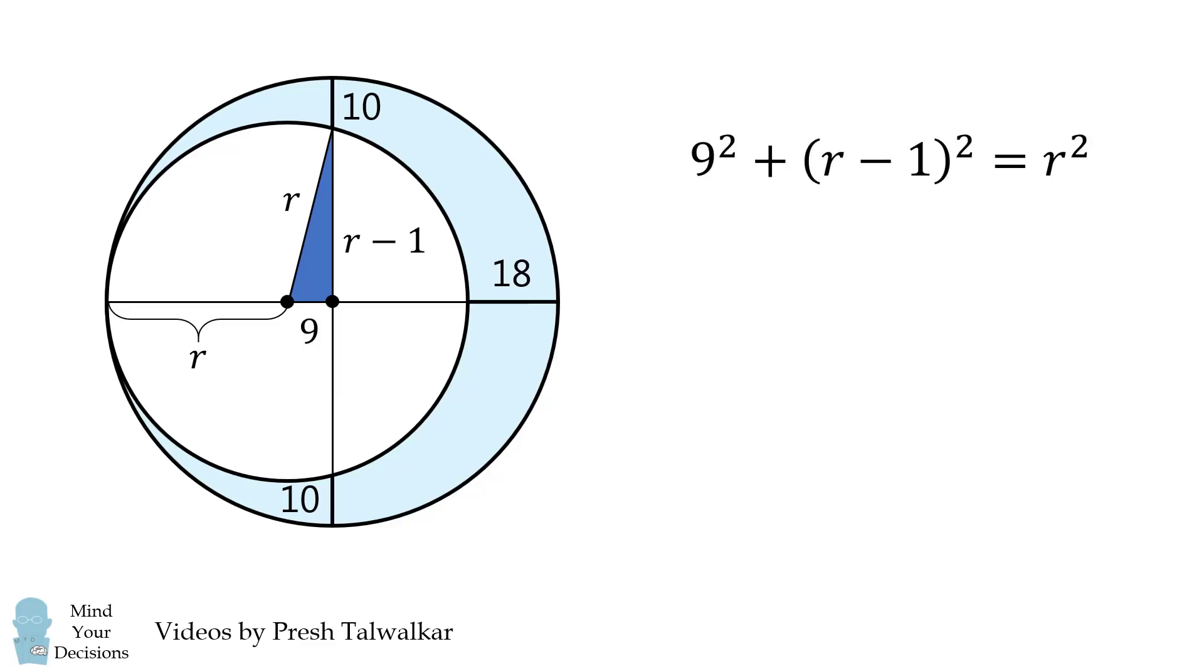That means 9 squared plus the quantity R minus 1 squared is equal to R squared. We have a single equation in the variable R, and we can solve it. We get that R is equal to 41.